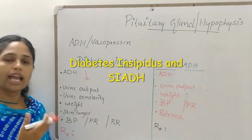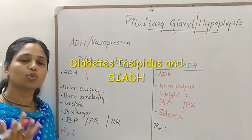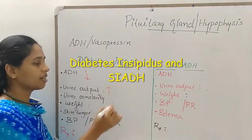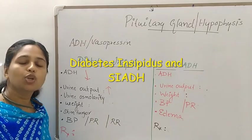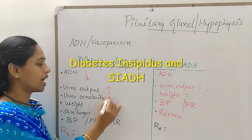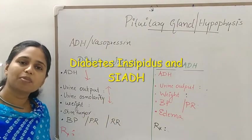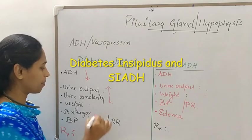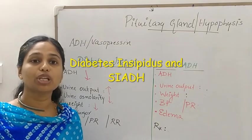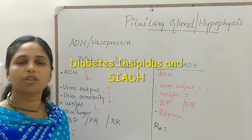In diabetes insipidus, because ADH is deficient, fluid retention does not occur. Fluid is excessively excreted, so urine output increases. Urine osmolarity decreases. There is excessive fluid loss, which causes dehydration. All symptoms will be associated with this particular condition.